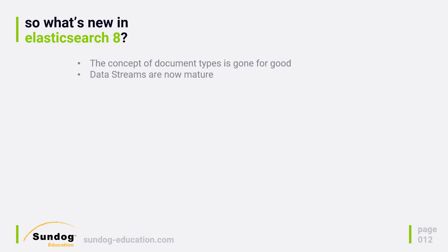Another new thing is data streams, which were introduced in the Elasticsearch 7 run. Data streams allow you to import continually streaming data into an Elasticsearch index, and it's built on top of index lifecycle management. Index lifecycle management allows you to automatically rotate indices over time and archive them to different storage types. The idea is the same: you want to look at a certain window of time in streaming data and treat that differently than older data. By building upon index lifecycle management, they were able to introduce data streams properly in Elasticsearch 8.